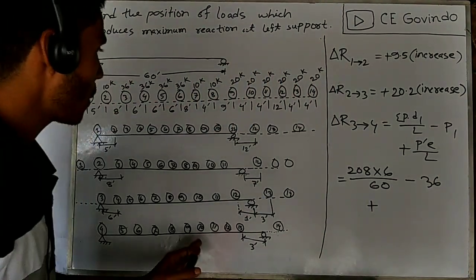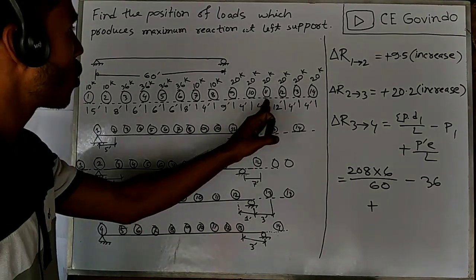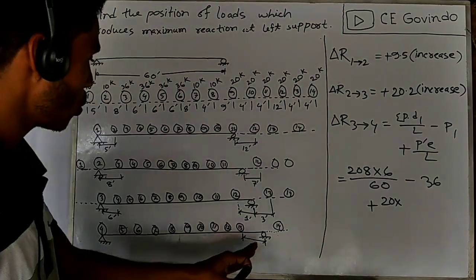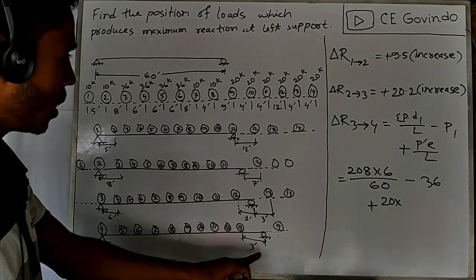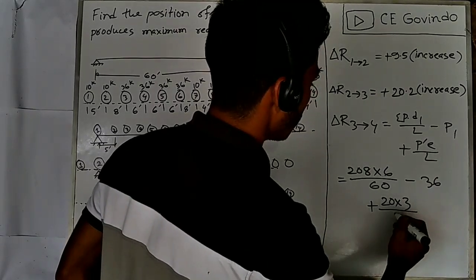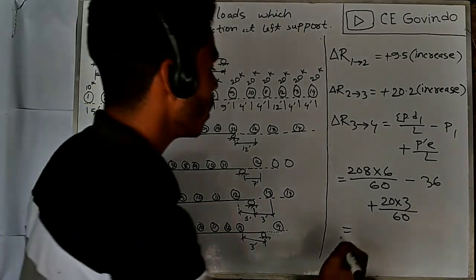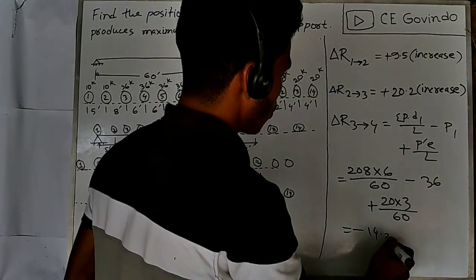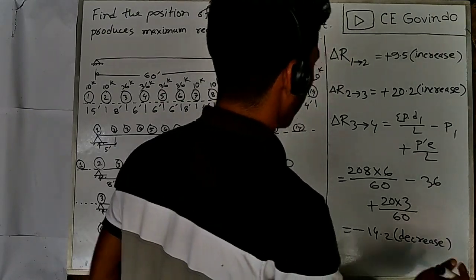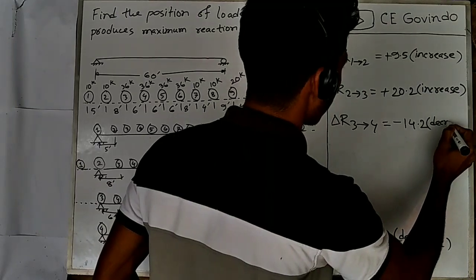20 into e, where e is the distance to the right support: 3 feet. So p-prime e by l equals 60 ft. This gives a negative value, indicating a decrease of minus 14.2.